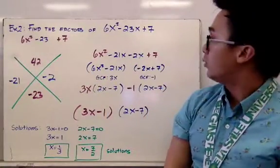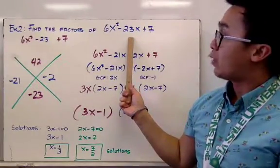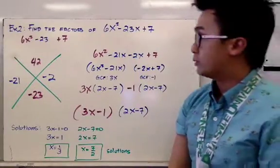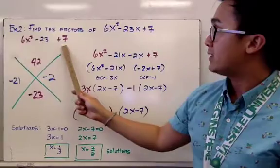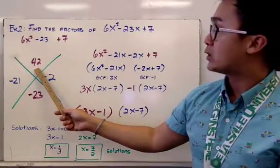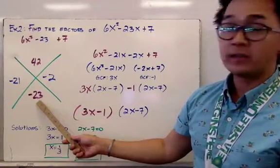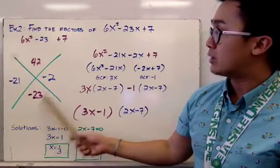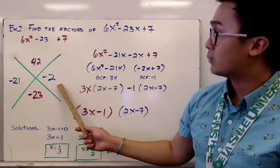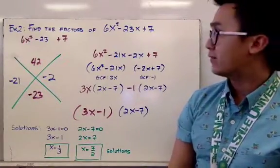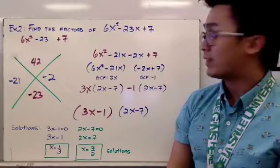For our second example we have 6x squared minus 23x plus 7. Multiply 6 and 7 to get 42. We look for factors of 42 that add up to negative 23. Since a negative times a negative is positive but their sum must be negative, the factors are negative 21 and negative 2.